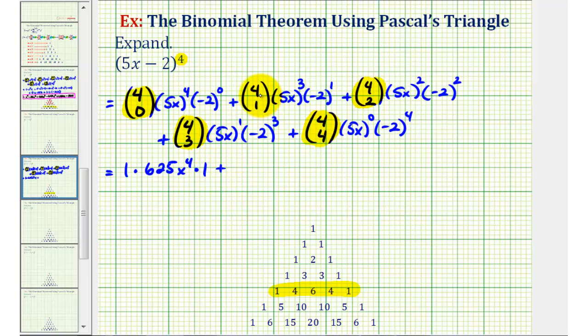Plus 4 choose 1, which is equal to 4, so we have 4 times 5x to the 3rd. Well, 5 to the 3rd is equal to 125, so we have 125x to the 3rd times negative 2.